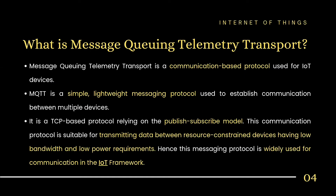Next is MQTT. MQTT is a communication-based protocol. It is a lightweight messaging protocol used across multiple devices. MQTT is a TCP-based protocol, whereas CoAP uses UDP. MQTT uses a publish-subscribe model, unlike CoAP's client-server model. It is designed for low bandwidth and low power requirements.